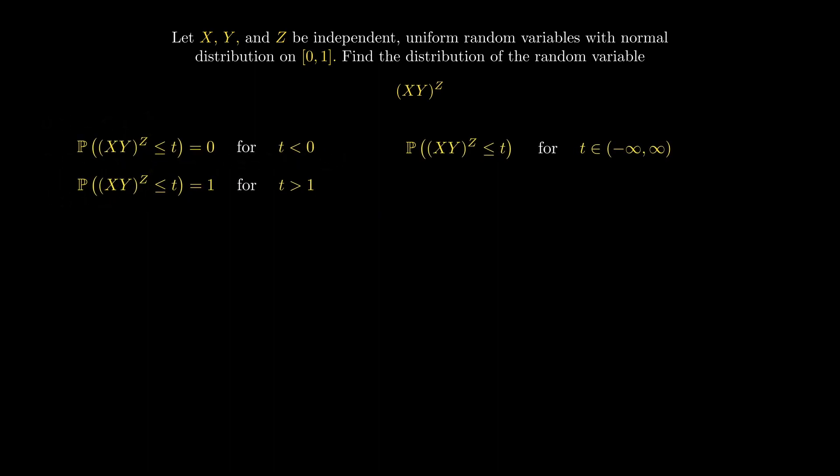Now we only have to deal with the case where t is in the interval from 0 to 1. First, let's take the z-th root of both sides, giving us the probability that XY is less than or equal to t to the power of 1 over z. Let's denote t^(1/z) by alpha. We'll treat this alpha as a fixed value in our calculations. We can use this to simplify our expression to the probability that XY is less than alpha.